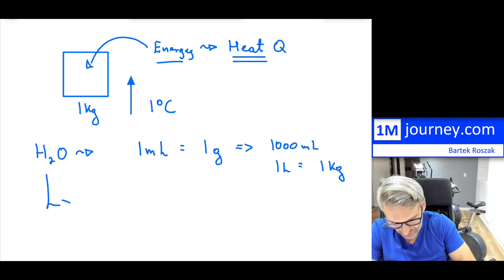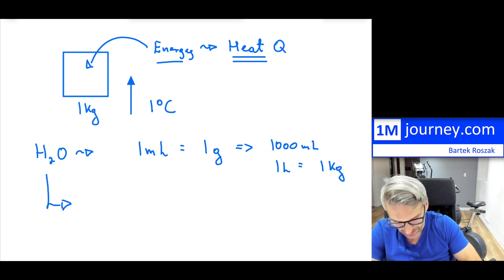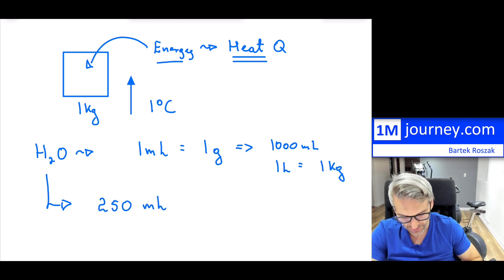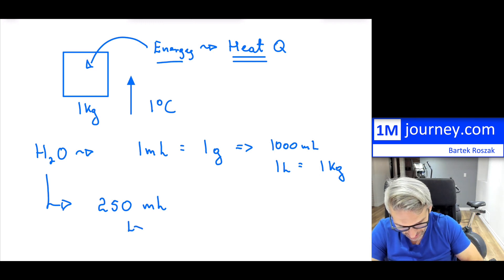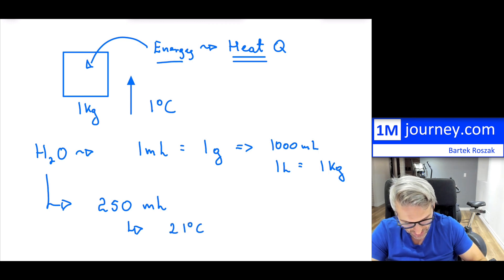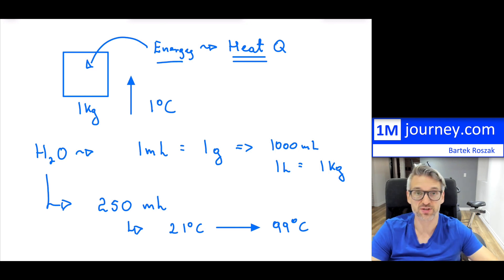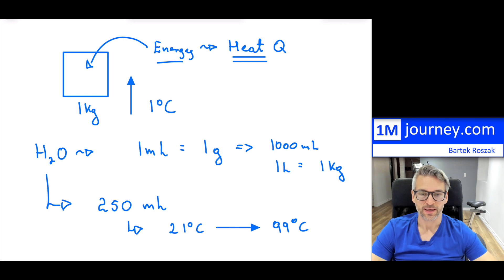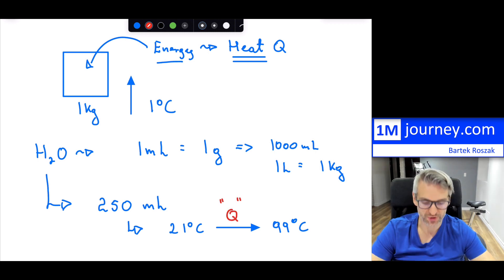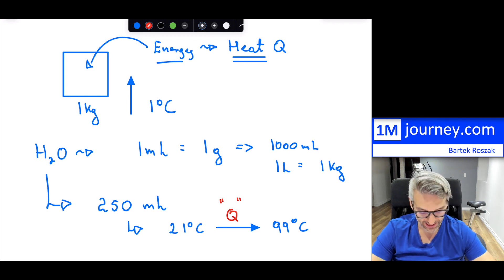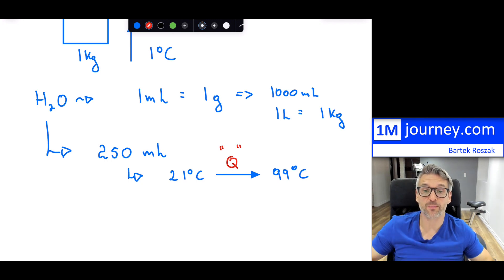For instance, if you take just a cup of coffee and wanted to boil the water — let's say that cup is 250 milliliters — and you wanted to bring it from room temperature, about 21 degrees Celsius, all the way up to 99 degrees Celsius, you would want to ask: how much energy would you need? That's asking how much heat would you have to transfer — converting from electrical energy into thermal energy.